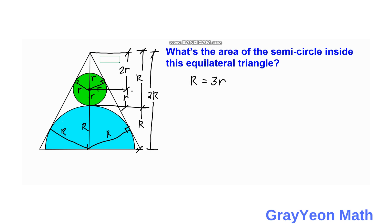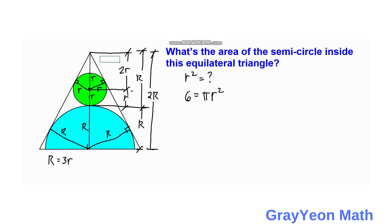Next, we get the value of r squared. It is given that the area of the green circle equals π r squared = 6, so r squared is equal to 6 over π.